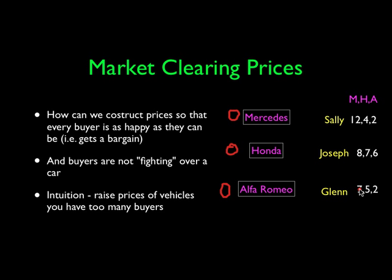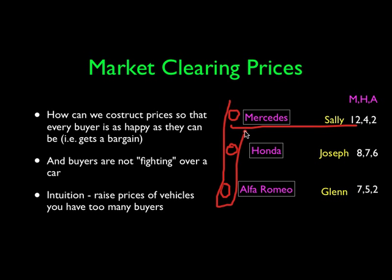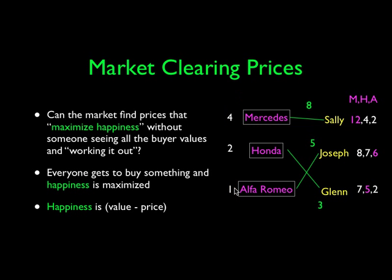How can we decide who gets the Mercedes and at what price? We've got to eliminate the conflict. The intuitive solution is that we slowly raise the prices, starting from all zeros, until buyers start falling off. As buyer interest drops, we get to the point where there's only one remaining buyer. It's kind of obvious that Sally's going to get the Mercedes, but there are other subtleties. We slowly increase the prices and let the buyers sort themselves into the place in the market that maximizes their happiness.